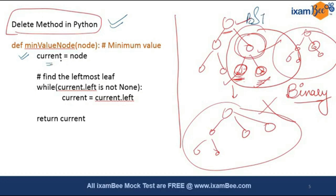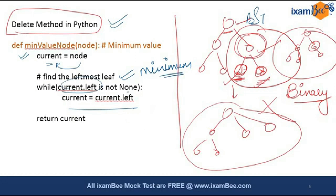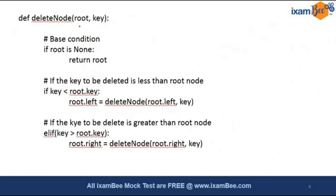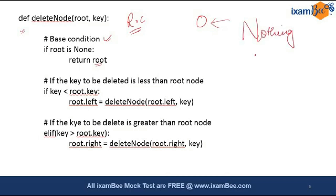To handle deletion, we first find the minimum value of the node. We take a temporary current node and find the leftmost leaf, which is the minimum in the tree, by assigning current = current.left until current.left is None. For the delete node function we write a recursive code with a base condition: if root is null, return root — there is nothing to delete. If the tree is null you have nothing to delete and just return whatever root has been there.